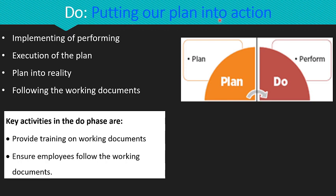The second stage of the PDCA cycle is the Do phase — putting our plan into action. We already have a plan and now we are implementing the desired objectives set in planning. The Do phase is all about execution. While performing the tasks, our employees and leaders should follow the documented processes and procedures prepared in the planning phase to ensure consistency. Key activities include training employees and leaders on working documents and ensuring everyone follows documented processes in their daily tasks.